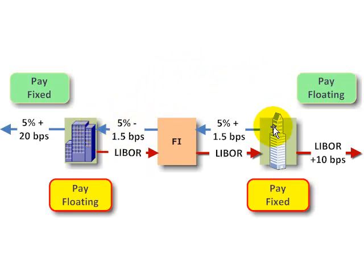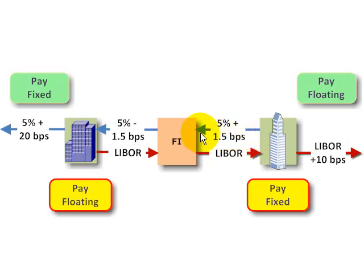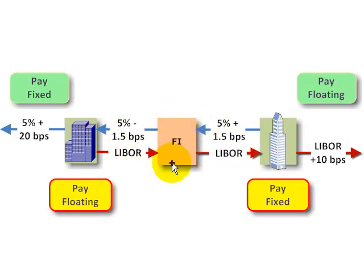If we go to company B in this swap, they're going to be what's called the fixed rate payer because they are going to pay, let's say, 5% plus one and a half basis points. In exchange for that, they're going to receive LIBOR, a floating rate. So these companies, by way of the financial intermediary, have engaged in a plain vanilla interest rate swap.